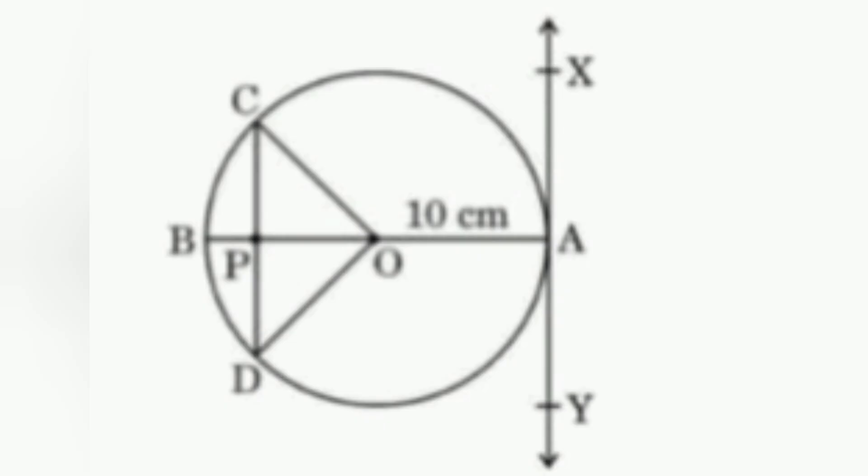We first try to find the length of OP. Given AP equals 16 centimeters, and OA is the radius, so OA equals 10 centimeters. Therefore, OP equals 16 minus 10, which is 6 centimeters.